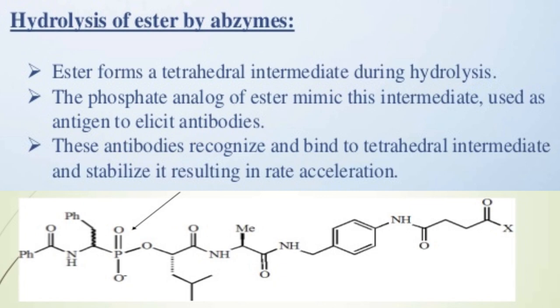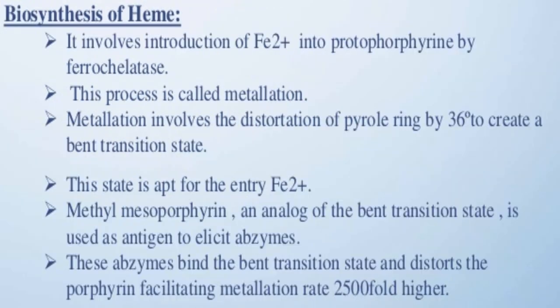Hydrolysis of ester by abzymes: hydrolysis of esters forms a tetrahedral intermediate during hydrolysis. The phosphate analog of the ester mimics this intermediate and is used as an antigen to elicit antibodies. These antibodies recognize and bind to tetrahedral intermediates and stabilize them, resulting in rate acceleration.